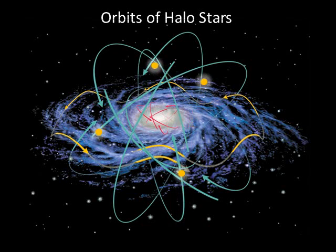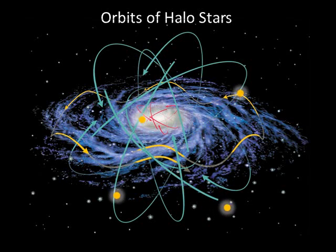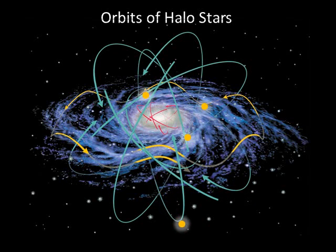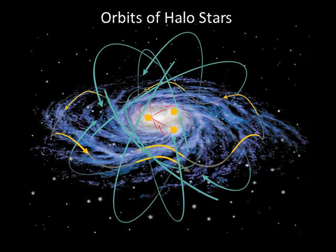The orbits of halo stars are much more elliptical, and the orientations are relatively random. The halo stars can go thousands of light years above and below the disk. The orbits of bulge stars are also more elliptical, with relatively random orientations. The differences in the orbits of the disk, bulge, and halo stars offer us clues to how our galaxy formed.